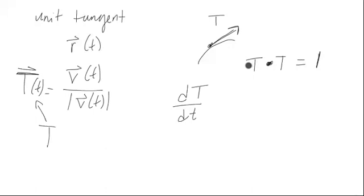Now, let's take the derivative of this equation. On this side, we're going to get zero. On this side, we use the product rule with the dot product.